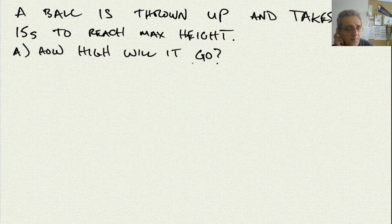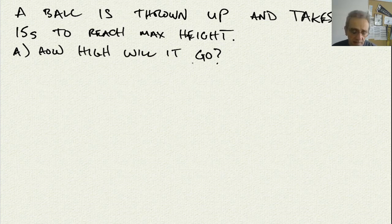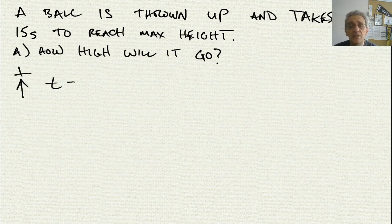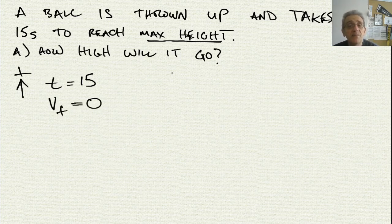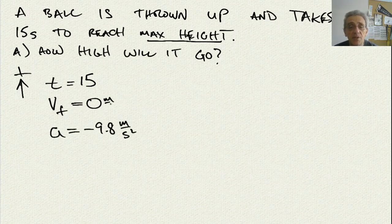Here is another question: a ball is thrown up and takes 15 seconds to reach maximum height. How high will it go? Let's say up is positive. We're given that T is 15 seconds. Because it says max height, I also know that the final velocity is zero at that maximum height. And implicitly, it's on Earth, so the acceleration must be negative 9.8 meters per second squared.